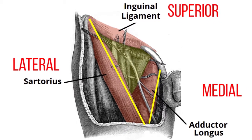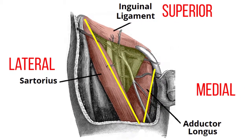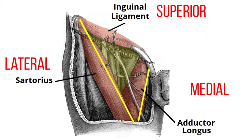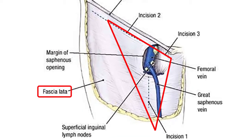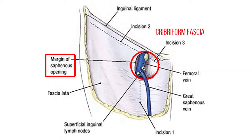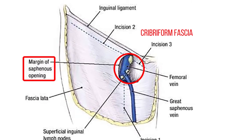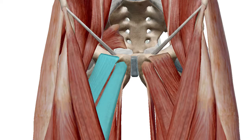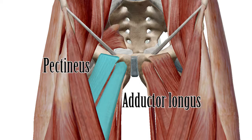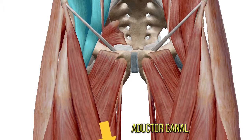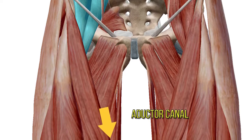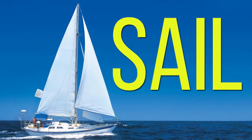The medial border is formed by the medial border of the adductor longus muscle. The roof of the femoral triangle, located anteriorly, is formed by the fascia lata, and at the saphenous opening by the cribiform fascia. The floor, located posteriorly, is formed by the pectineus and adductor longus muscles medially and by the iliopsoas muscle laterally. The apex of the triangle continues into the adductor canal.